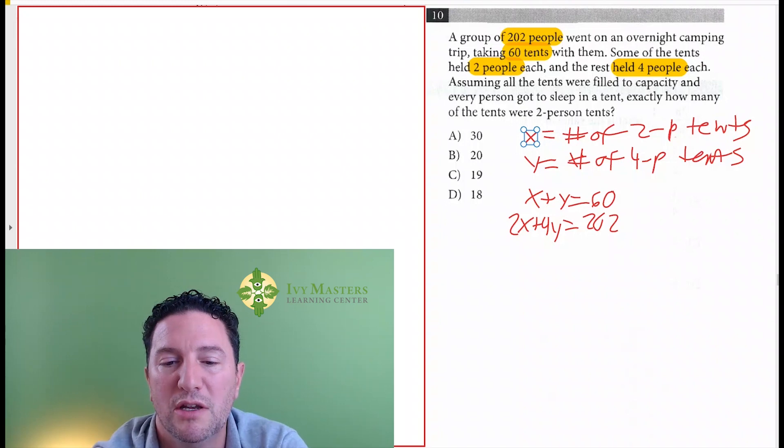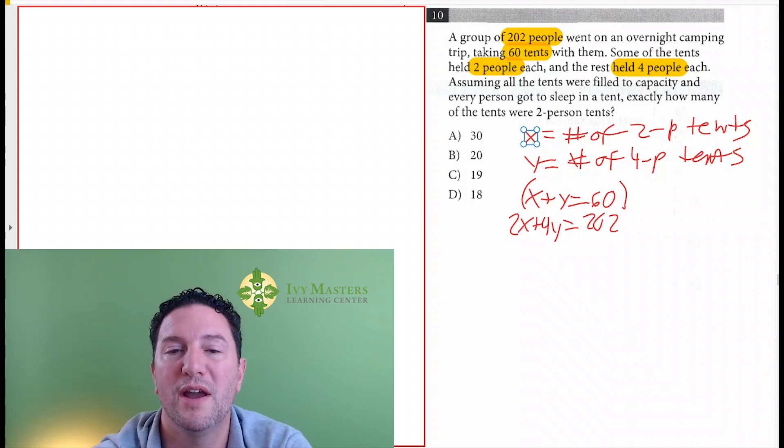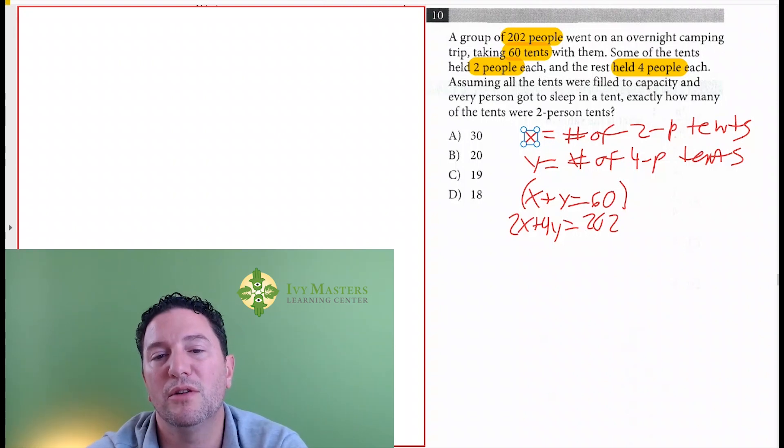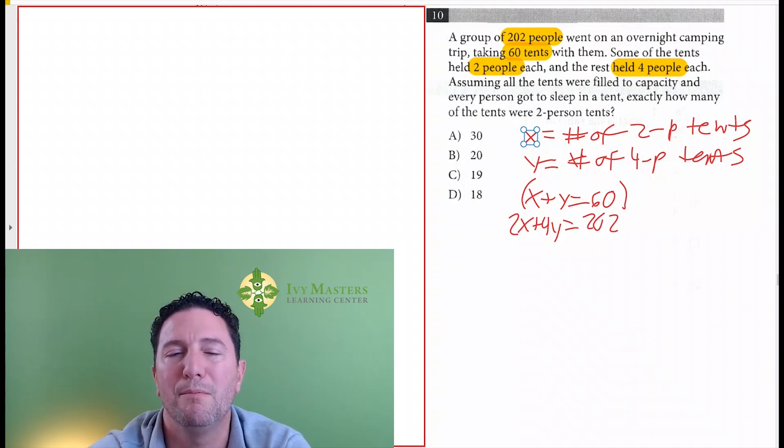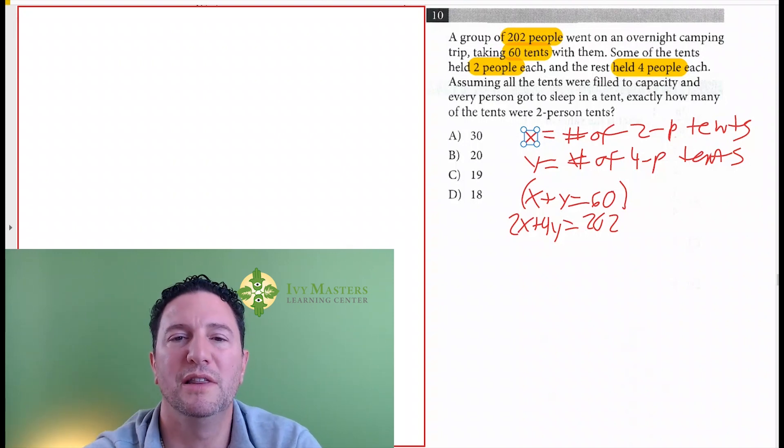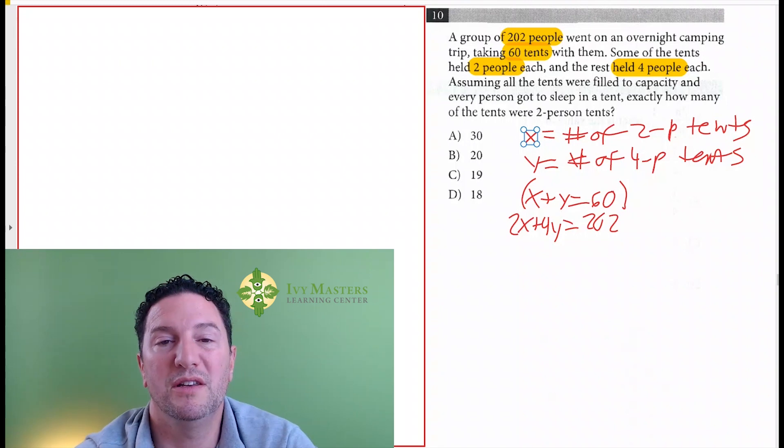And now you could eliminate or substitute. Since they are lined up, I'm more of a fan of elimination. So what I'm going to do is I want to solve for the variable I need to solve for right away, because typically what they'll do is they will have the number of two-people tents.